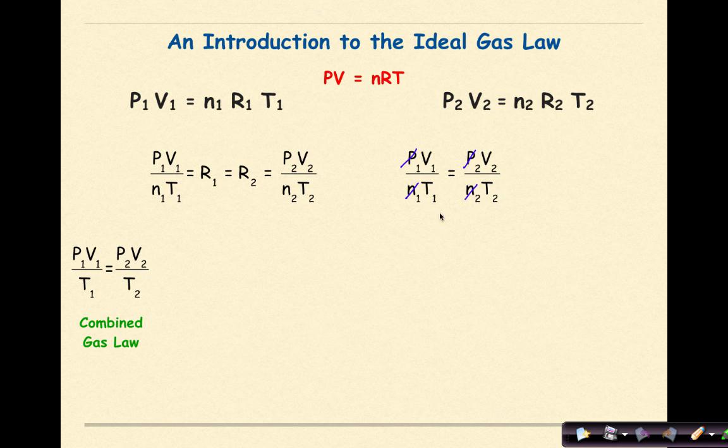What if we had the number of moles of gas held constant and also the pressure held constant? If that was the situation, then we'd have V1 over T1 equals V2 over T2. And in that situation, we'd have Charles' law.